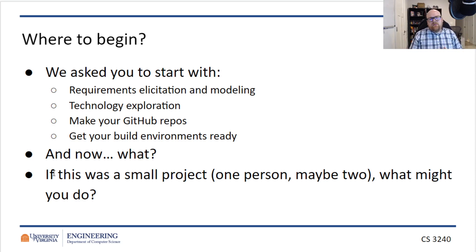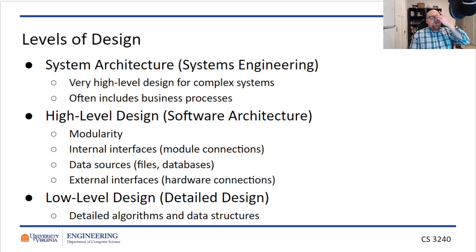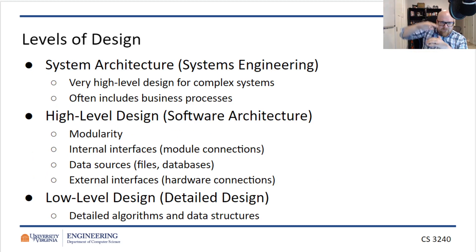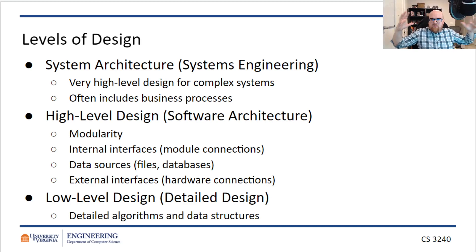If this were a small project — one or two persons — you would start by designing the system. And we can talk about design at very different levels. First, we can talk about system architecture. System architecture is very high-level design of complex systems. It often talks about business processes — how the system is going to be used externally, not just within the software.